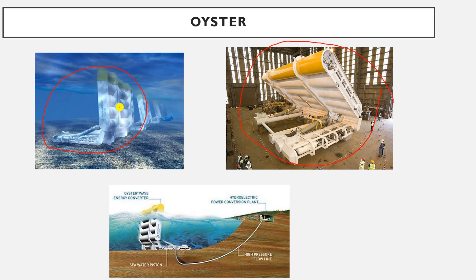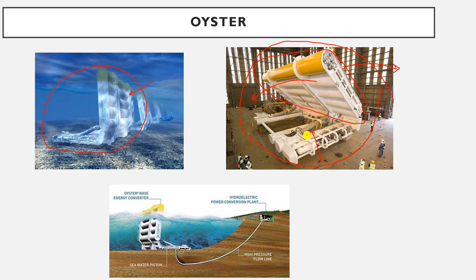As you can see, it is formed of a rigid flap. This rigid flap moves back and forth due to the effect of the waves. At the same time, you will find here two hydraulic pistons.